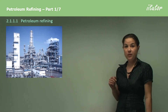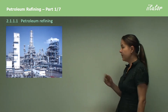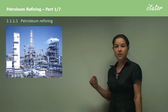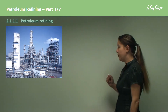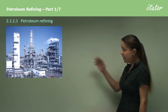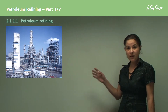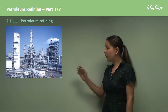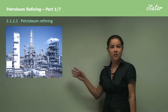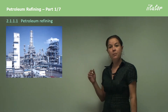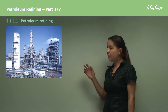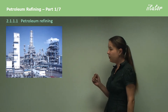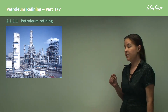Let's start by looking at petroleum refining. Here we have a petroleum refinery and these are found all over the world. As you can see, it is a very large-scale process, and the reason for this is that we need the products coming out of this refinery because humans are big consumers of many things, and therefore it has to be a large-scale process.